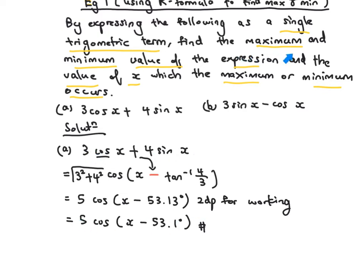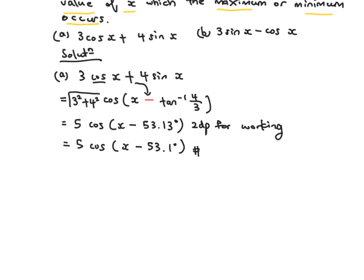Now let's find the maximum and minimum value of this expression. We know the cosine graph starts from the origin, descends and then ascends, while the sine graph starts from the origin, ascends and then descends. When you add multiples of these two together, you don't know what will happen due to the sum of these two curves — that's why they want you to find the maximum value. But we know the whole expression is equivalent to a cosine graph, so the max value is 5 times the max value of any cosine graph, which is 1, giving 5.